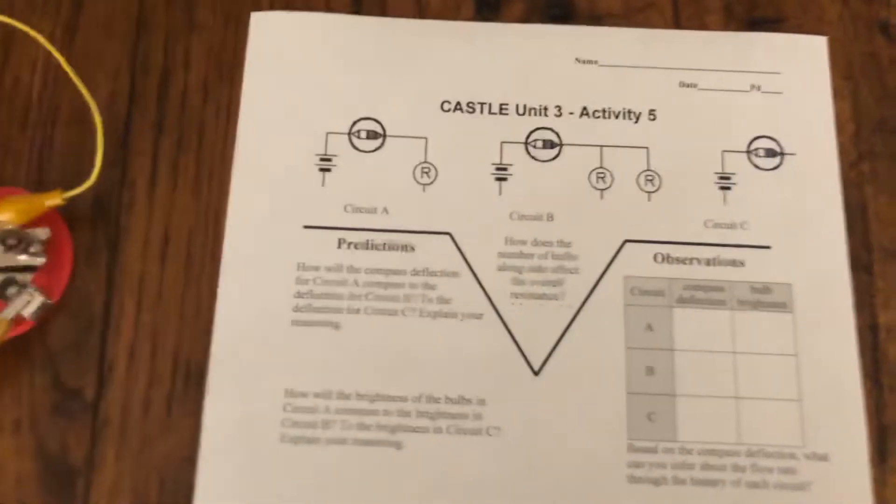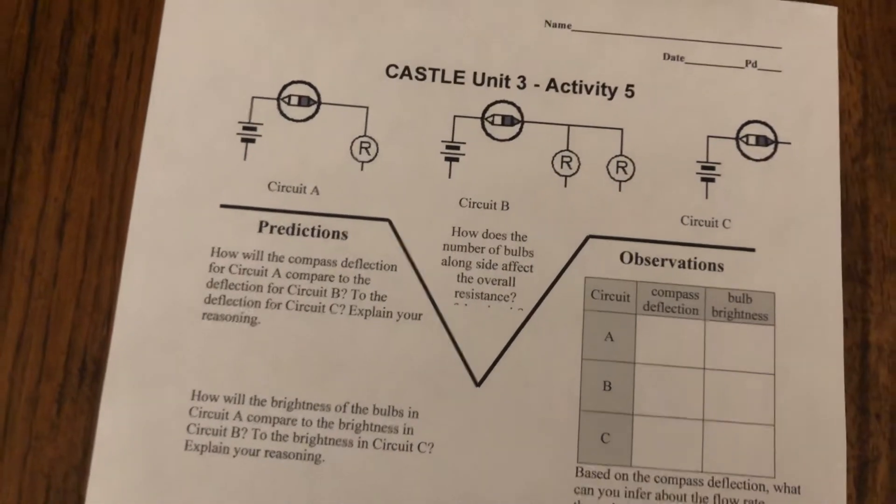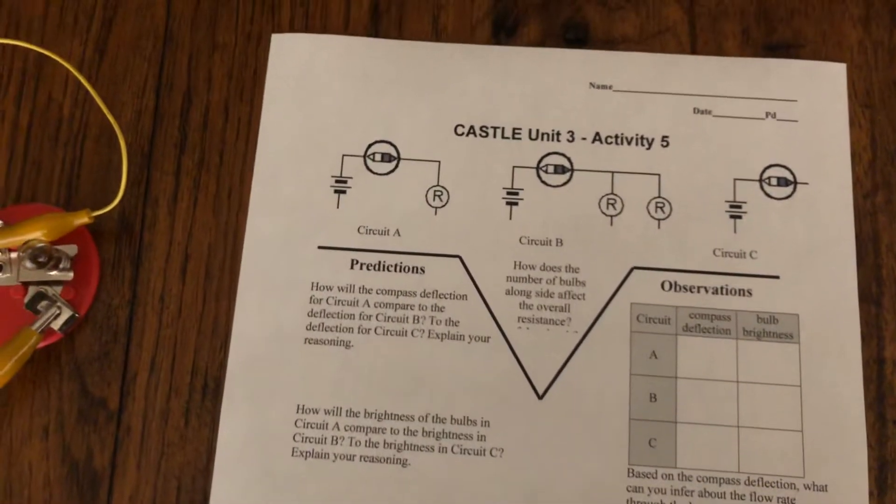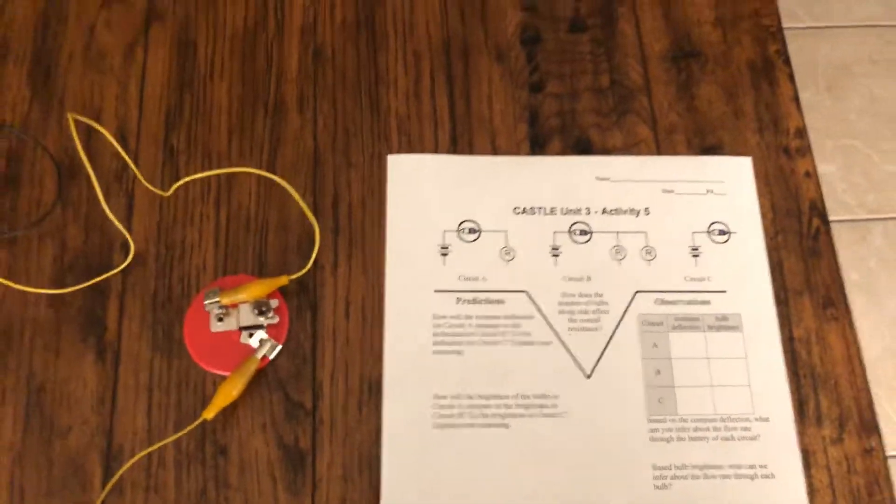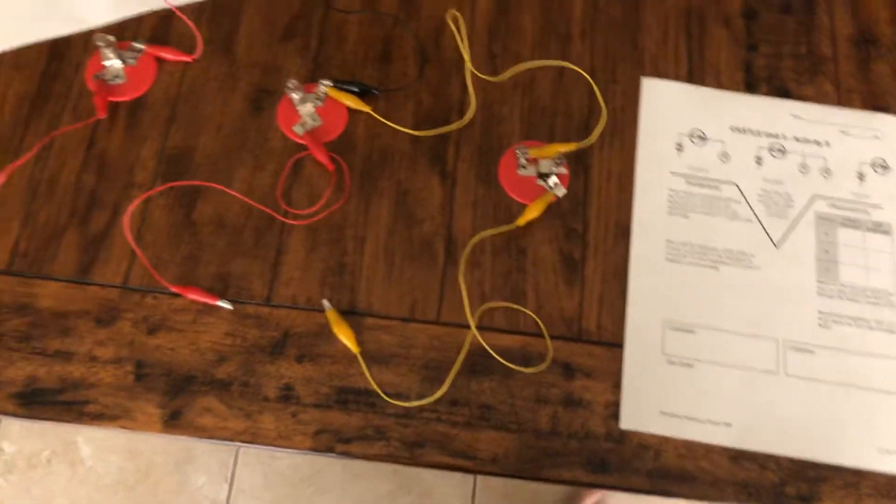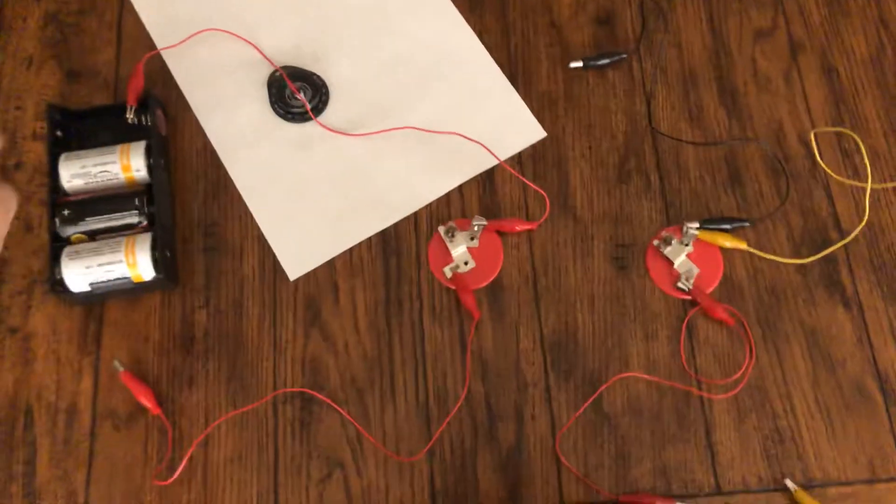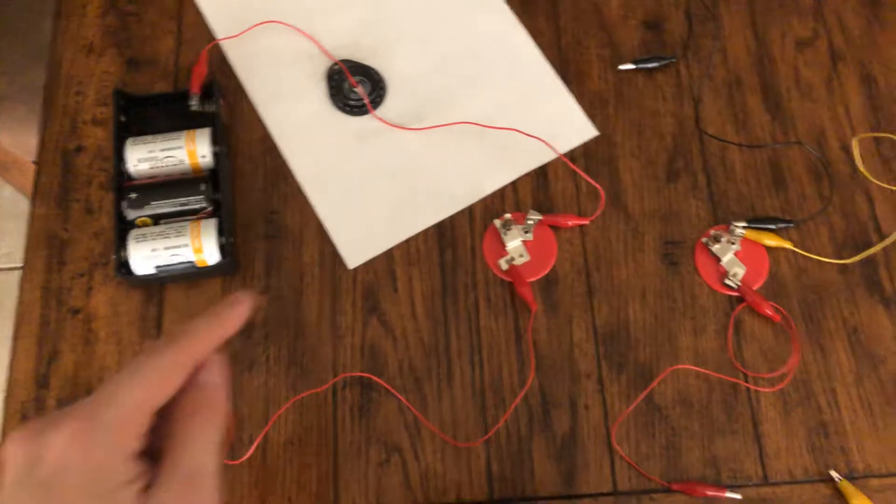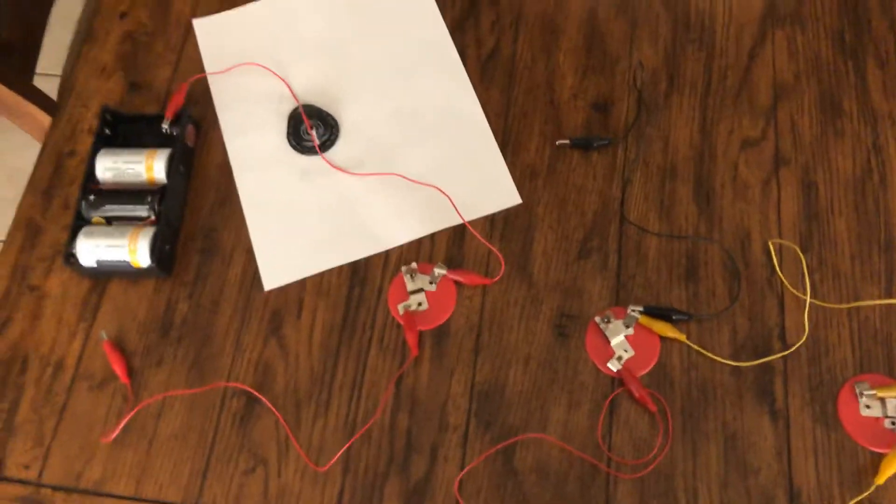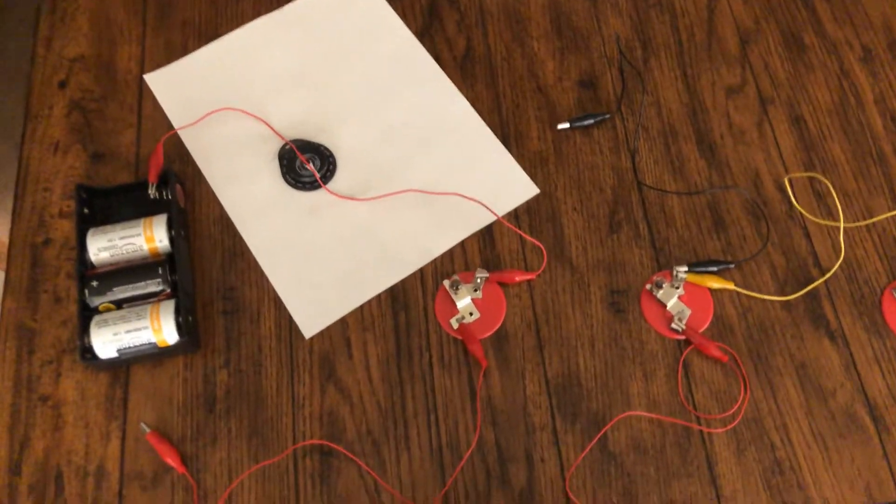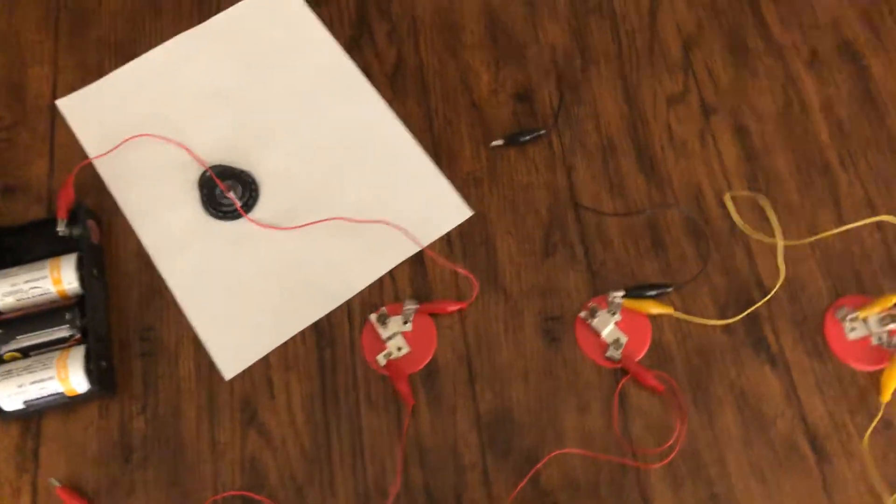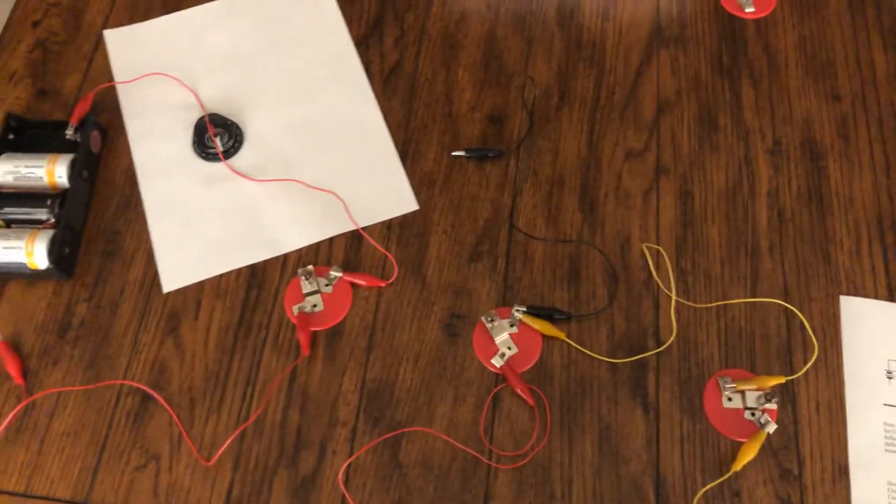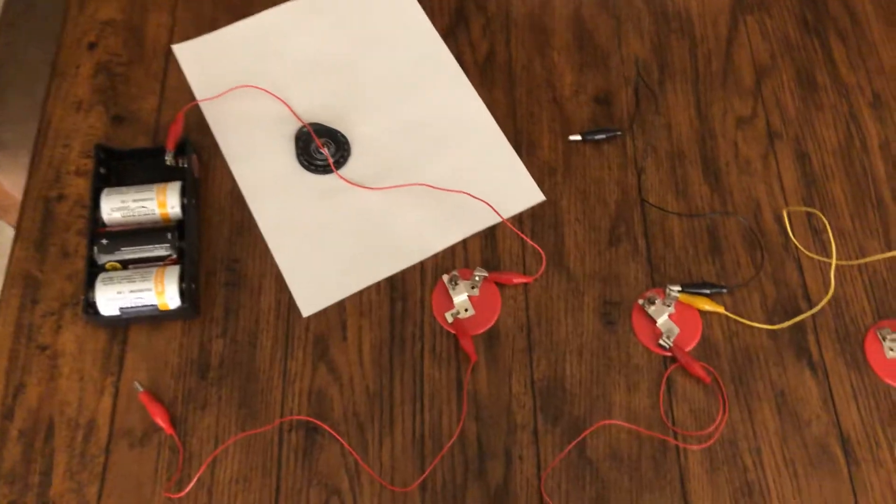So what we want to see is what effect on the total resistance will adding bulbs side by side or in branches have. Yesterday we looked at the effect of adding them in a row or in series in that same single loop, and we saw that adding multiple bulbs one after the other increased the overall resistance because the charge had to get pushed through all of them.